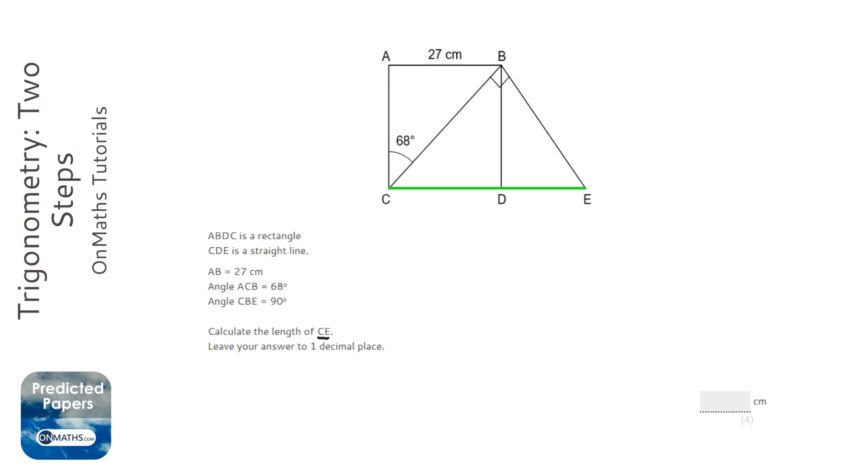Now I'm going to first of all find out what CB is. I'm going to label this x. I realize it needs to be trigonometry because this is a rectangle, that's a right angle, so I need to use trigonometry for it.